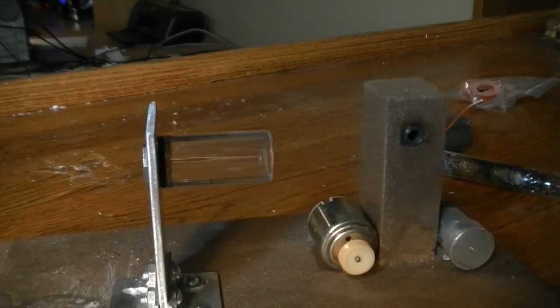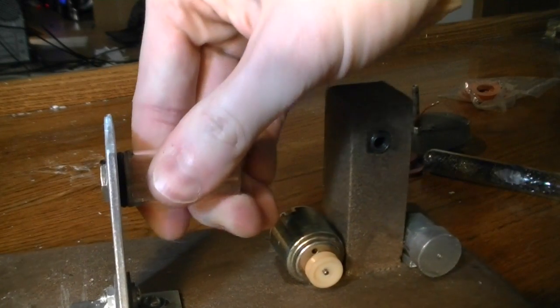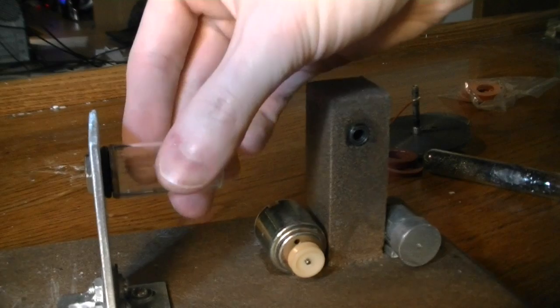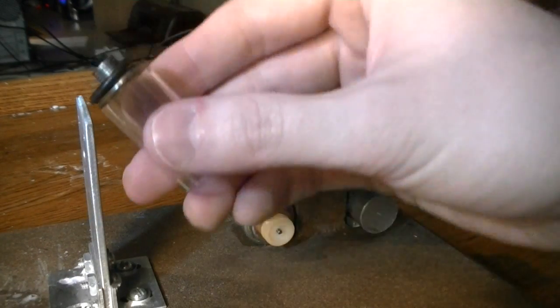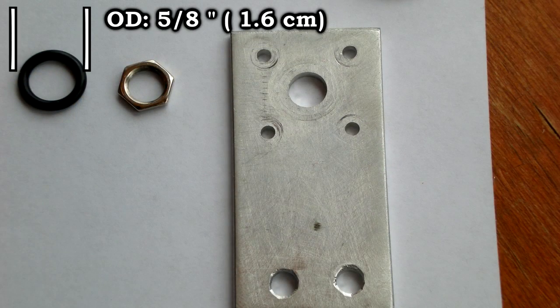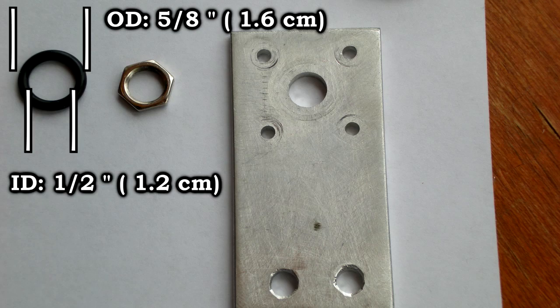Now to remove this Pyrex cylinder I just have to unscrew it. It does take a little force to loosen it up. I added this black rubber washer to keep air from leaking from the Pyrex test tube side to outside of the engine by seeping past the thin nut. This rubber washer has an outer diameter of five eighths of an inch and an inner diameter of one half inch.